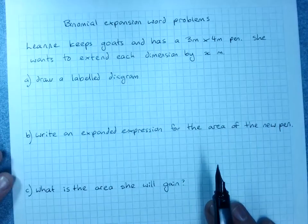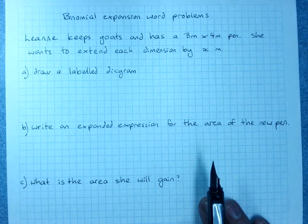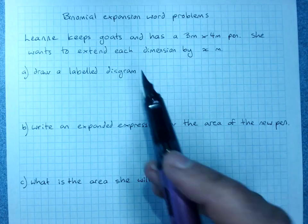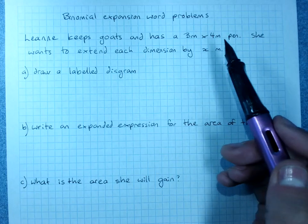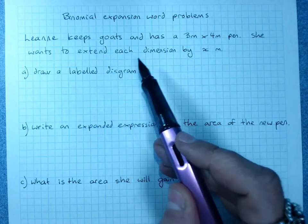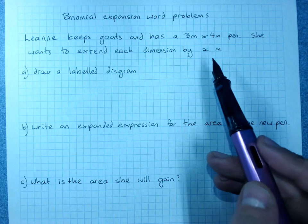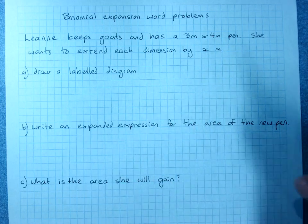We'll often end up with word problems where we need a binomial expansion. Leanne keeps goats and has a three meter by four meter pen. She wants to extend each dimension by x meters. Firstly draw a diagram.